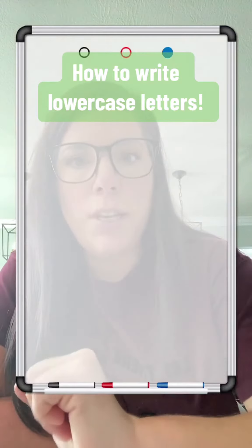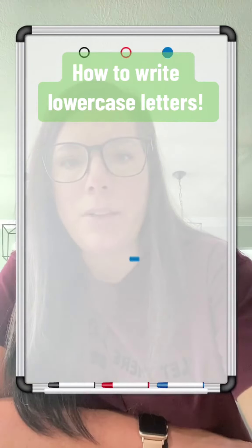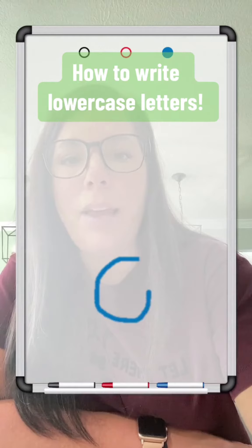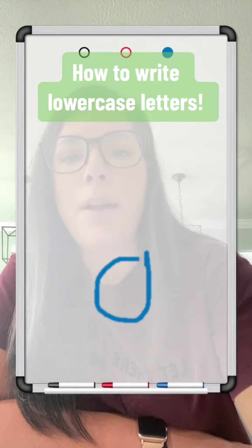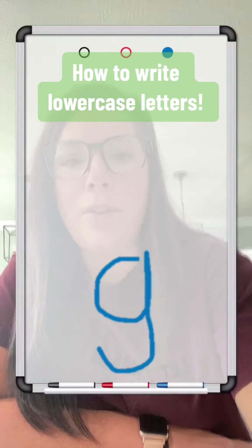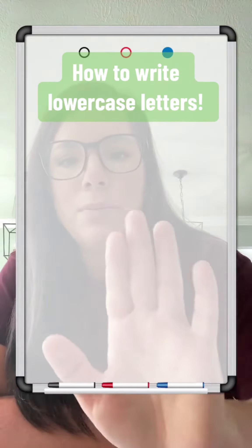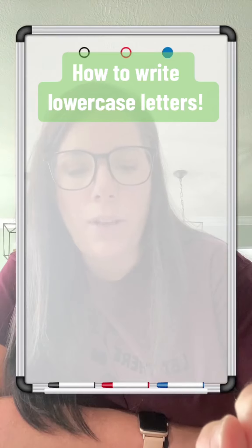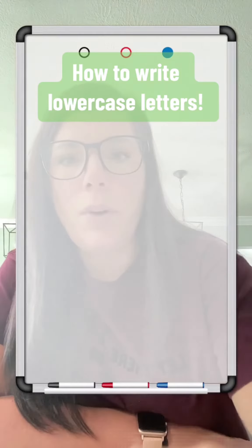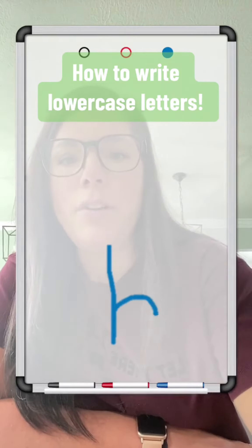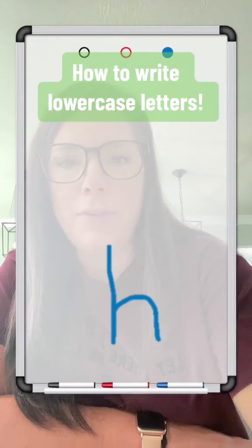G is a magic C letter. We're going to do a magic C, up like a helicopter bump, back down, curve around. H is a tall letter. We're going to dive down, swim up and over, dive down.